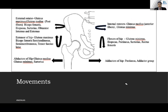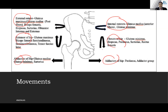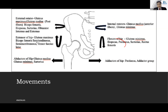Moreover, the hip joint is responsible for a variety of movements: external rotation, internal rotation, extension, flexion, abduction, and adduction. It is very important to understand that these movements will be affected not only by issues of the hip joint itself, but also by issues of any of these muscles.